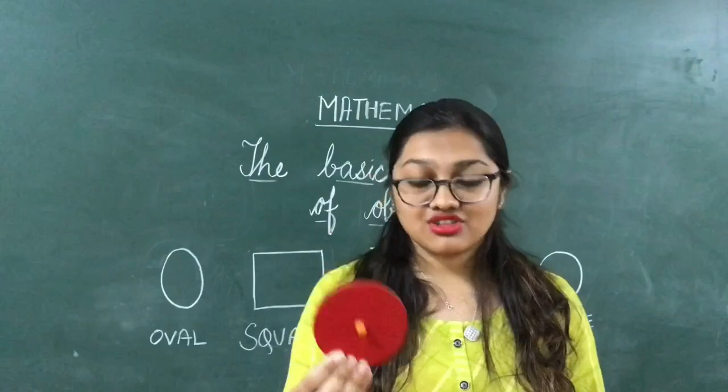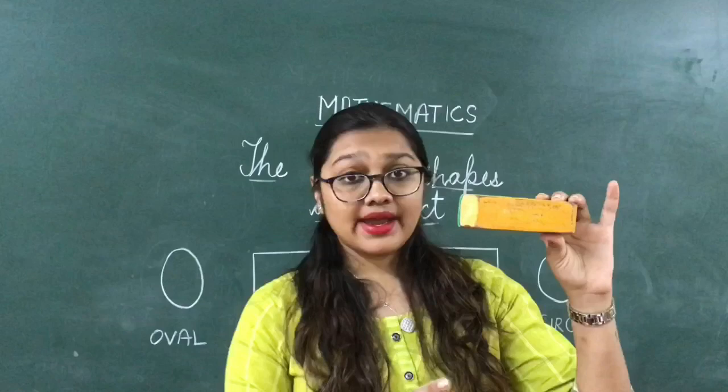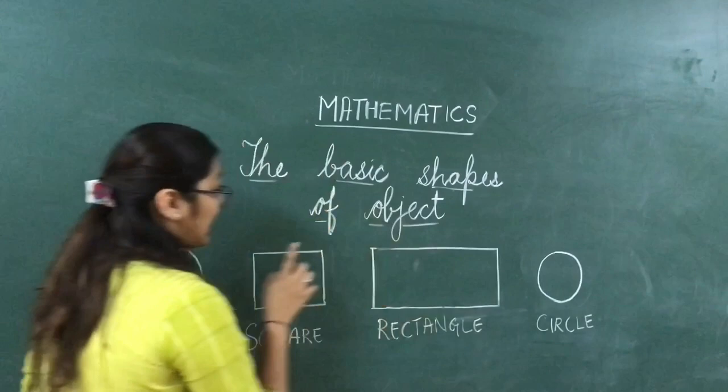So children, tell me what is the shape of a duster? Square or rectangle? It is rectangle because rectangle has two opposite sides equal and square has all the sides equal. Did you understand students? Thank you children. Enjoy learning.